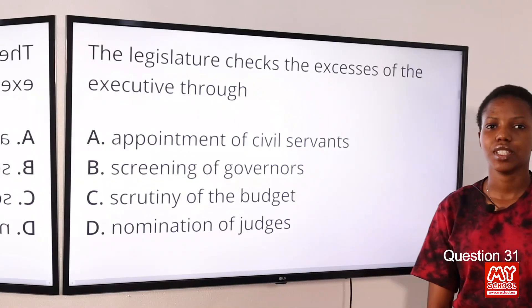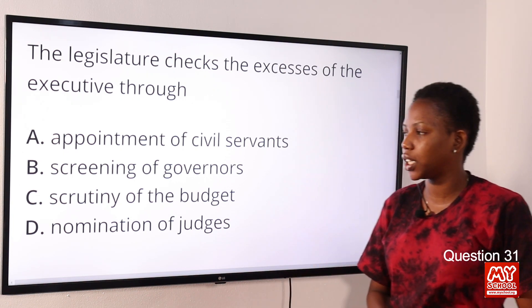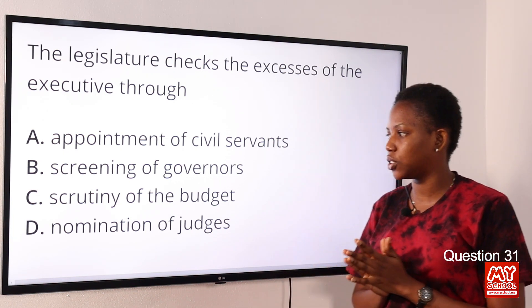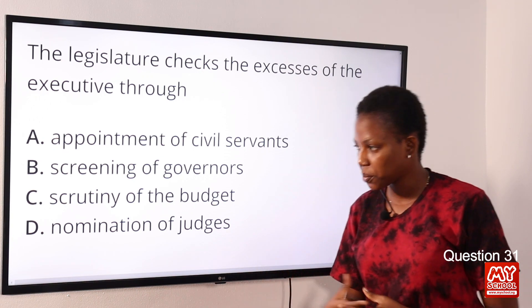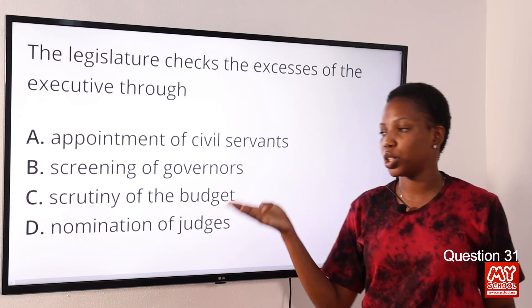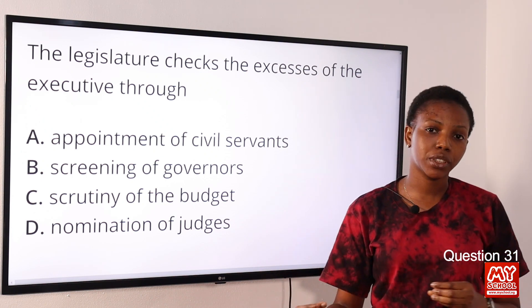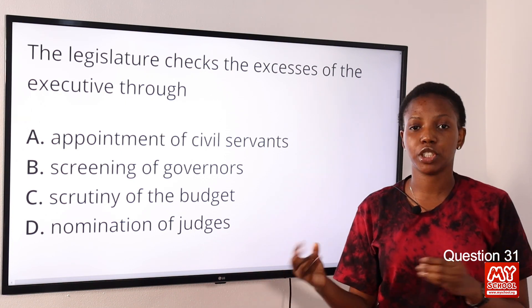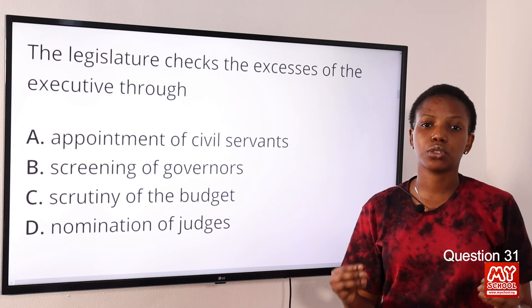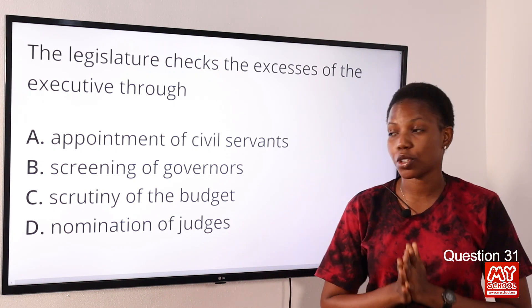Question 31: The legislature checks the excesses of the executive through — Option A: appointment of civil servants. Option B: screening of governors. Option C: scrutiny of the budget. Option D: nomination of judges. The answer is Option C, scrutiny of the budget. The legislature has the authority to scrutinize and inspect budgets in order to monitor the way public funds are being used by the executive.